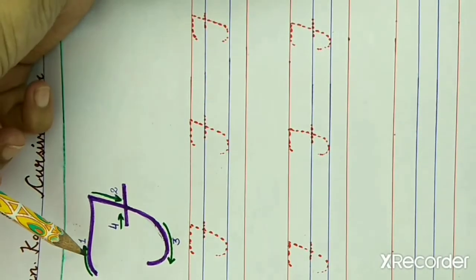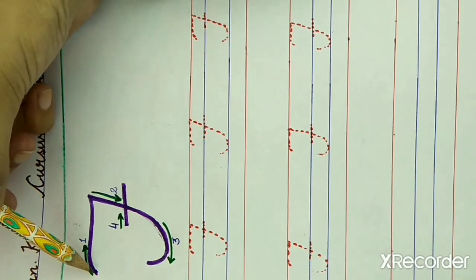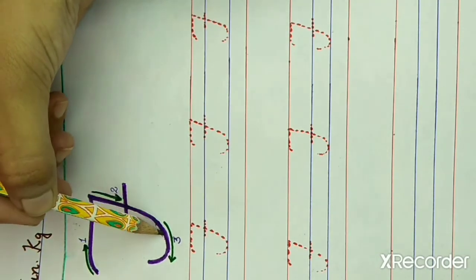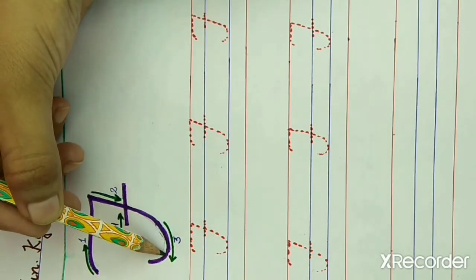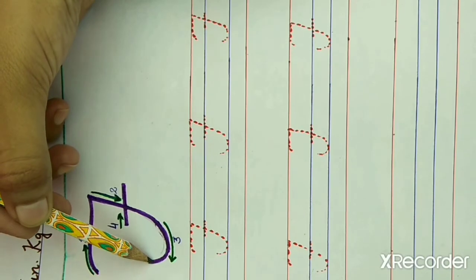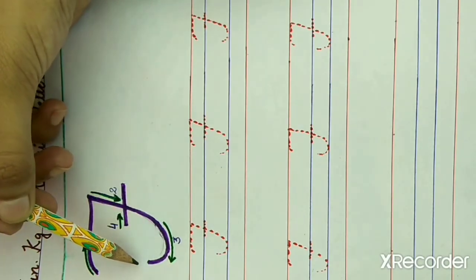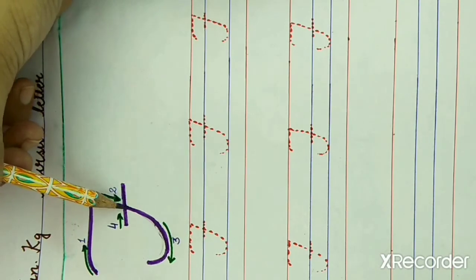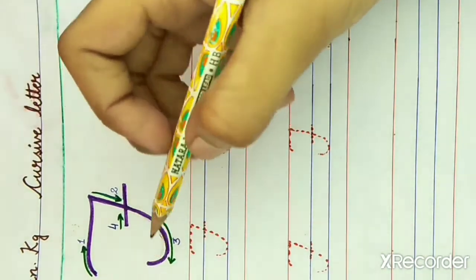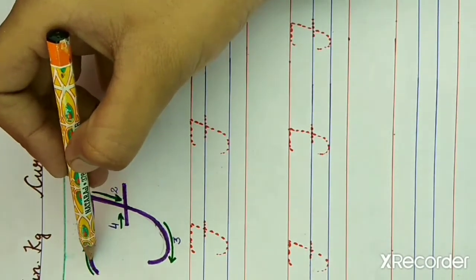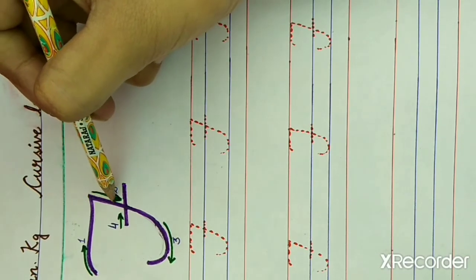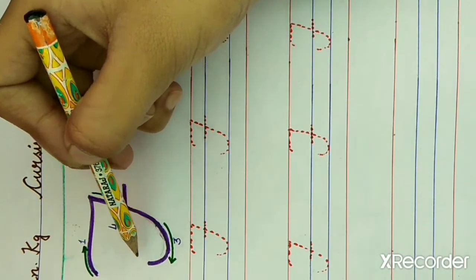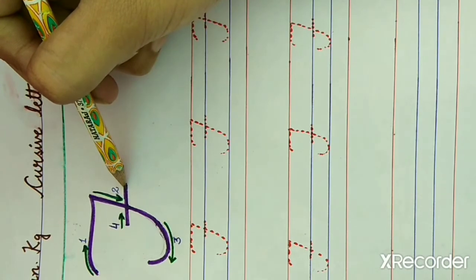Now look here. The lines for letter F: first line is a curved line, second line is a slanting line, third line is again a small semicircle, and the fourth line is a slipping line in the mid of the slanting line. You have to draw this curved line first, second line is slanting line, third line is small semicircle, fourth line is slipping line.